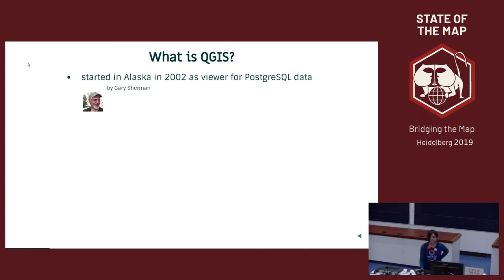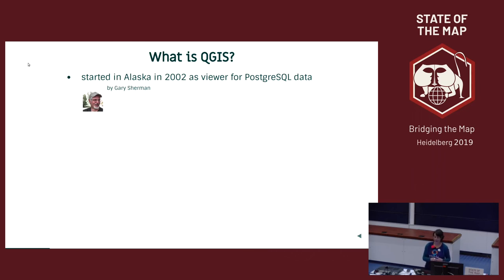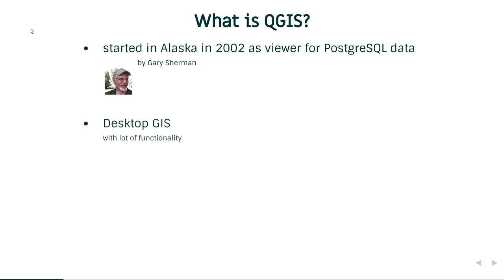Let's see where QGIS comes from. We say QGIS in Germany. It started in Alaska in 2002, when PostGIS was already alive. There was Gary Sherman — he needed a viewer for PostGIS data and developed QGIS as a viewer for PostgreSQL and PostGIS data. So it's a desktop GIS.